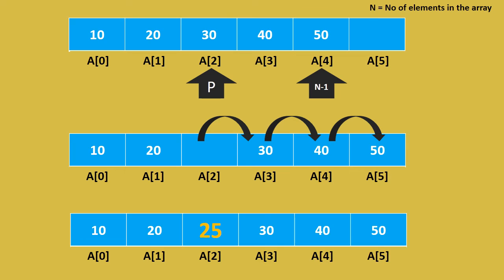Once the new element is introduced, the complete final array is: 10, 20, 25, 30, 40 and 50. This is how inserting an element into a one-dimensional array occurs.